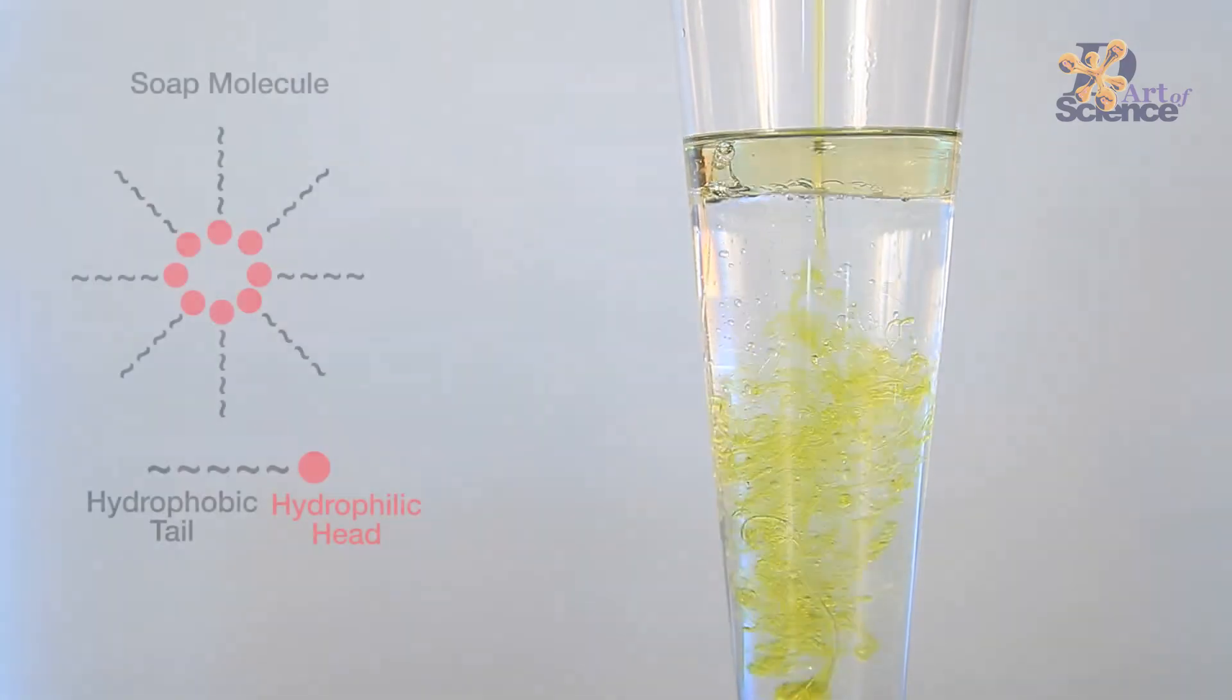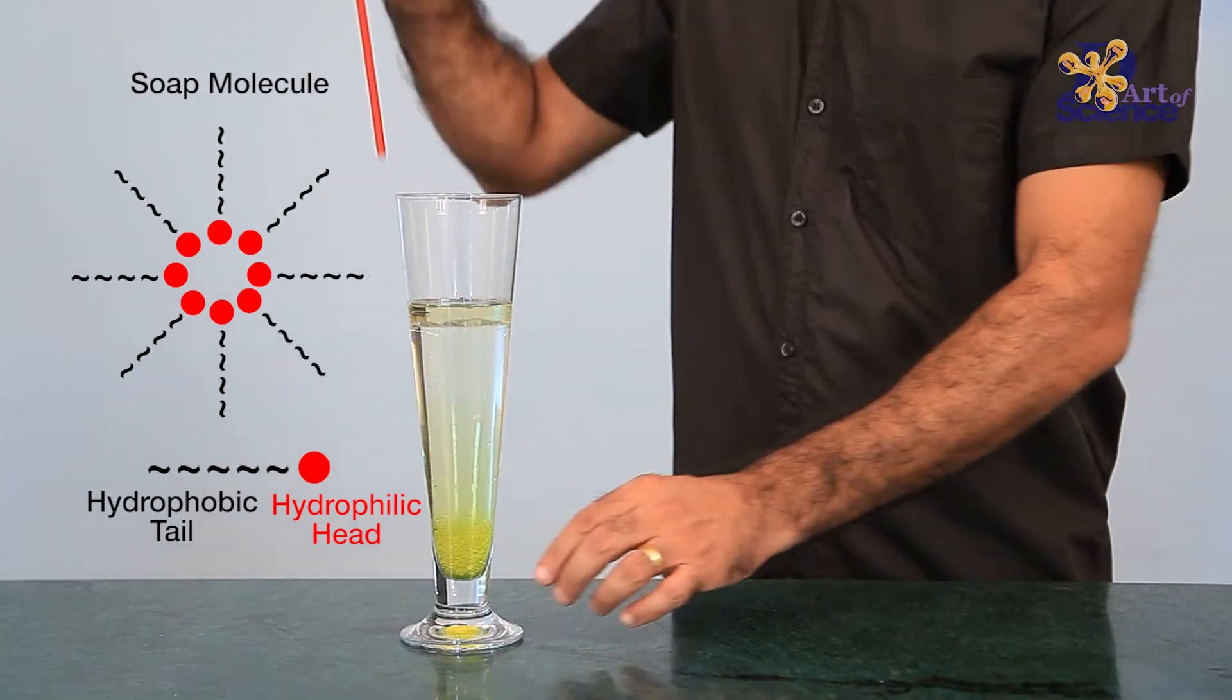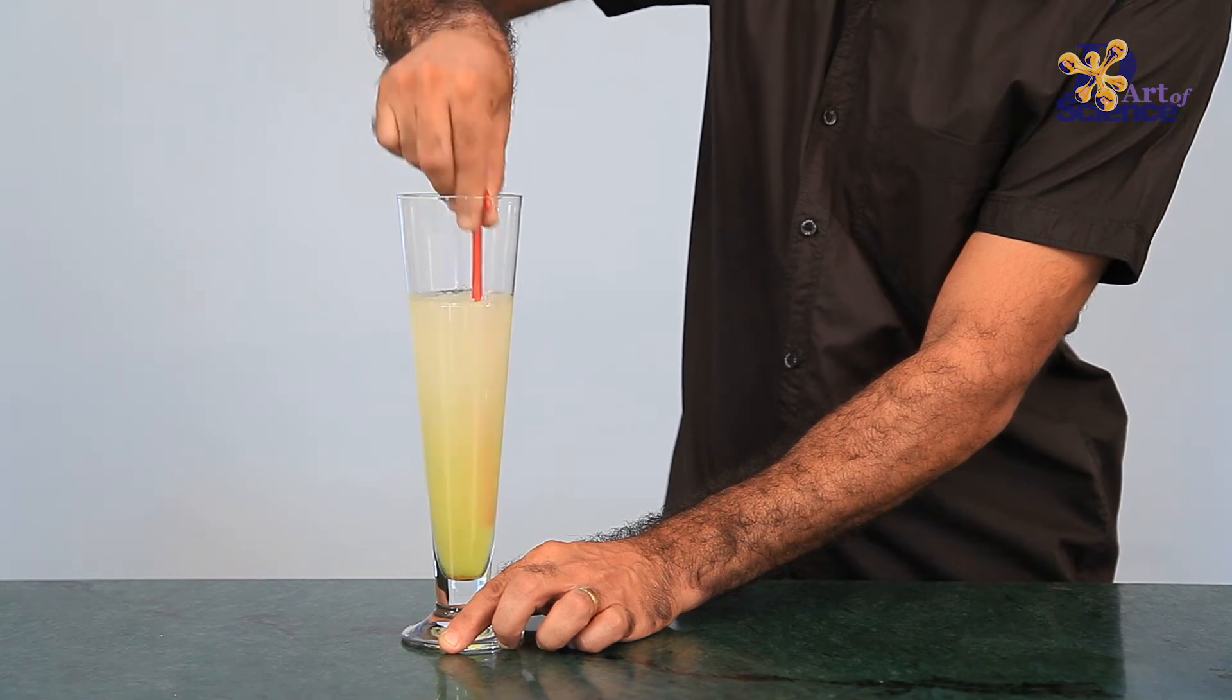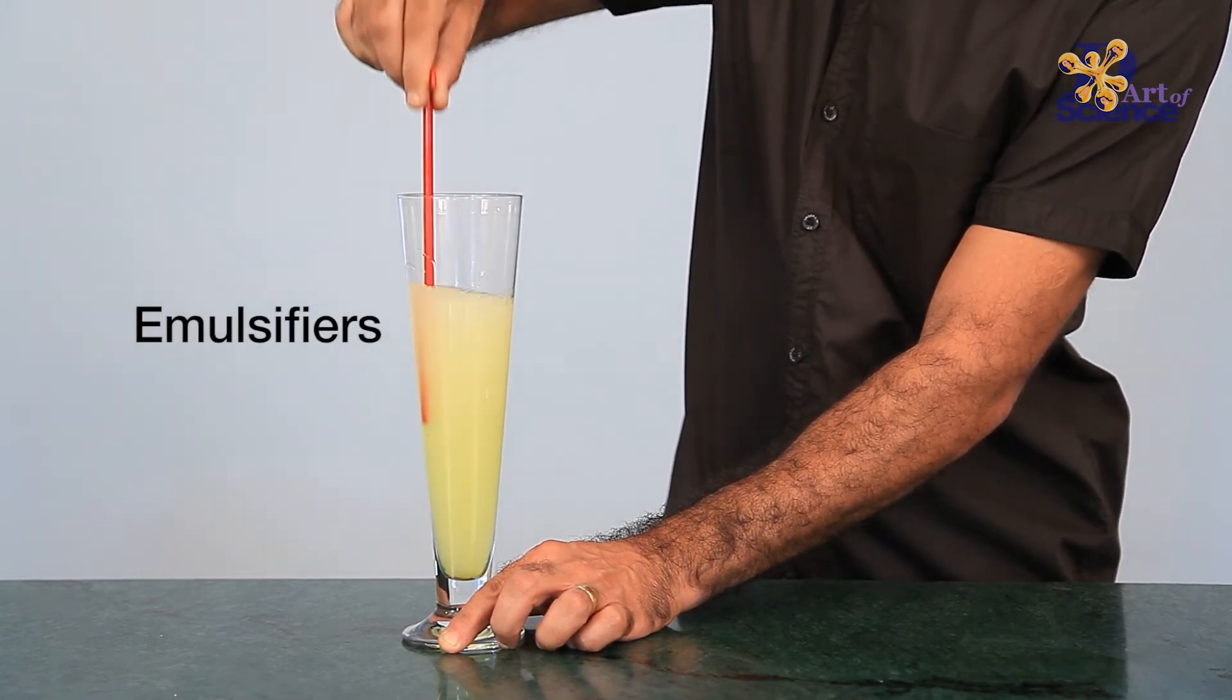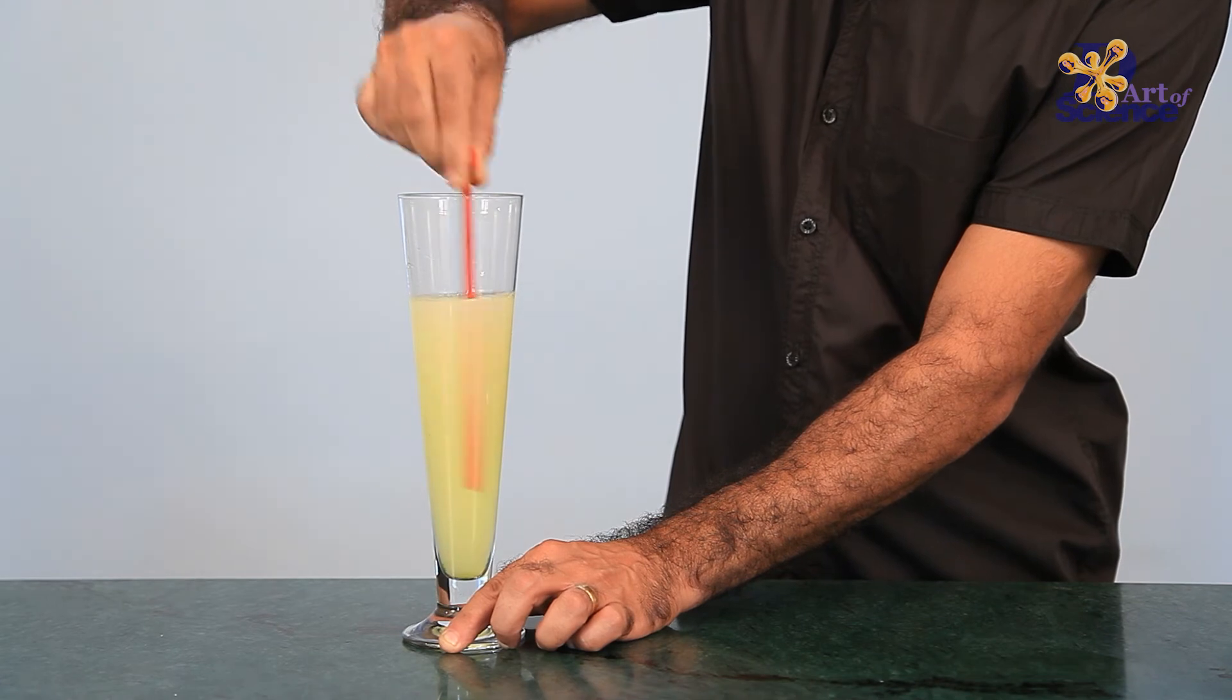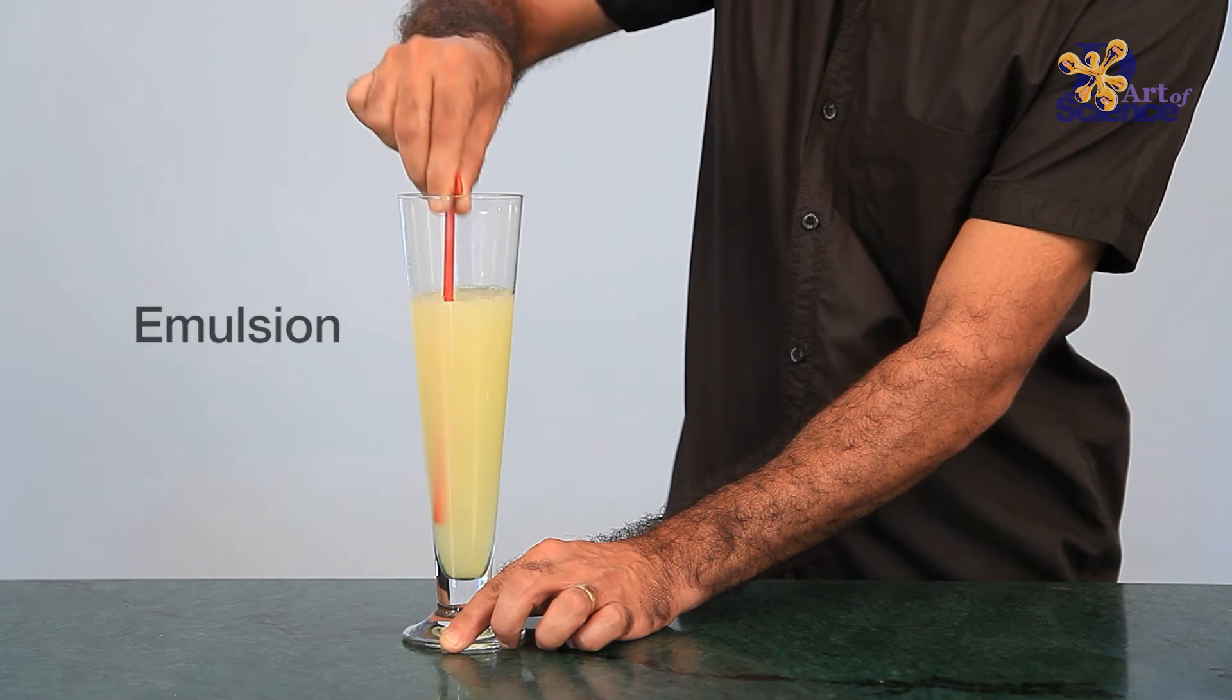Detergents and soaps have both hydrophobic and hydrophilic properties, and they use this property to remove oil and dirt from the clothes. That's why they are known as emulsifiers. The dishwashing liquid breaks the oil into smaller droplets and covers them with itself, which later suspends in the water, resulting in this oil-water mixture known as emulsion.